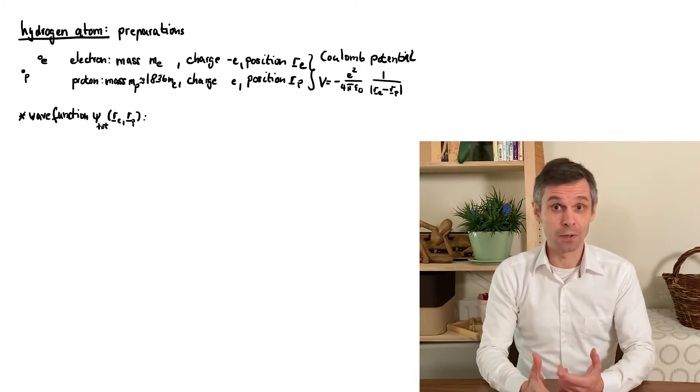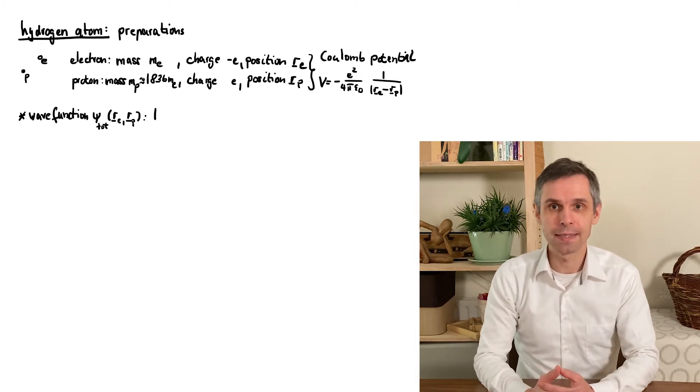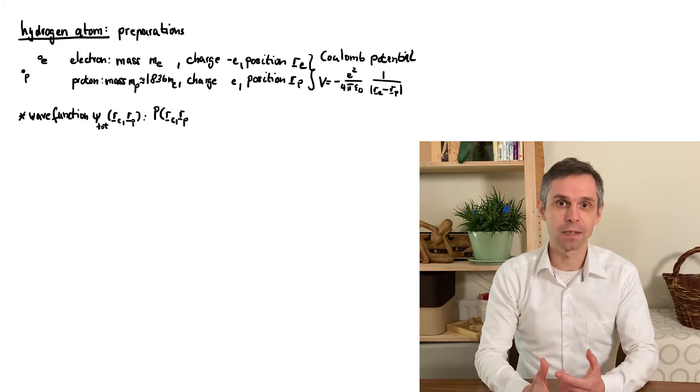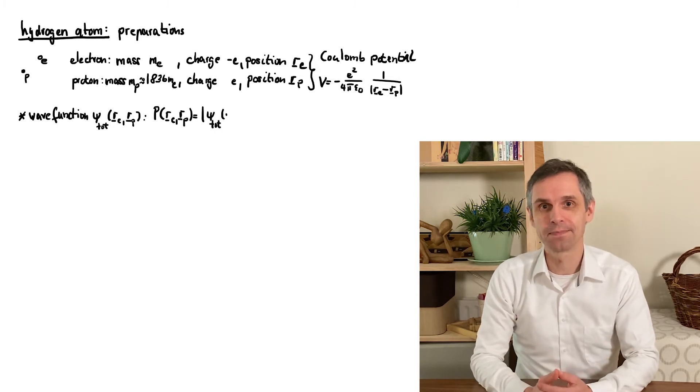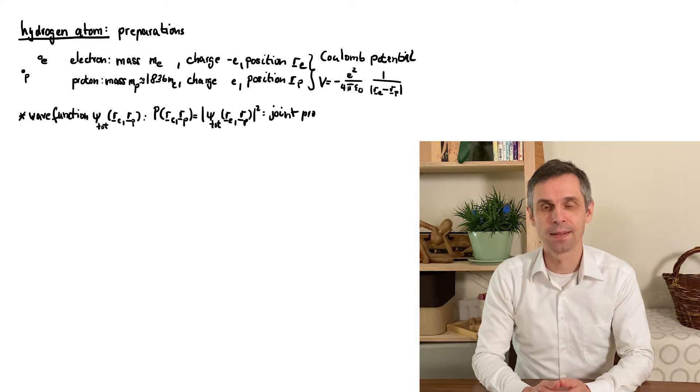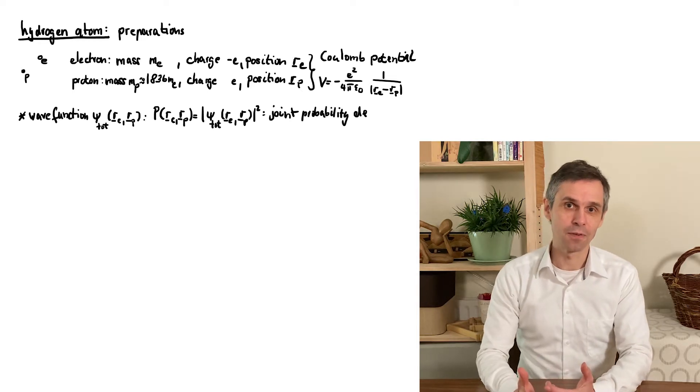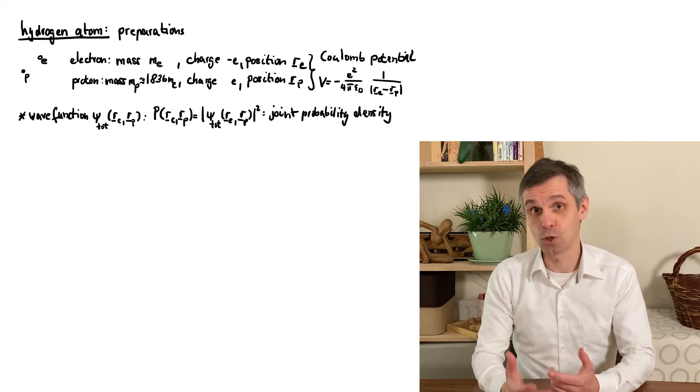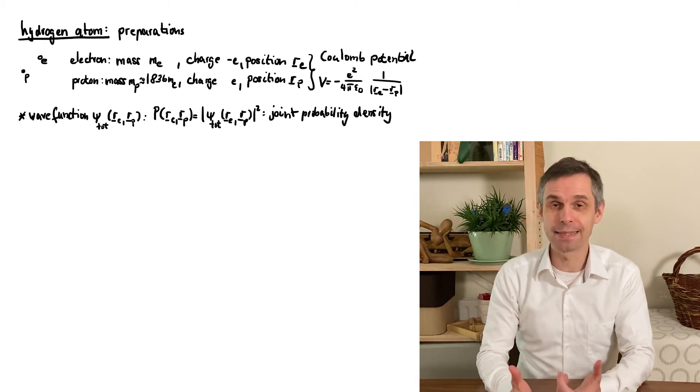Indeed, what we work out from this is a joint probability density that informs us of the outcomes of such joint measurements. For instance, you can infer from this conditional probabilities and correlations, including entanglement.